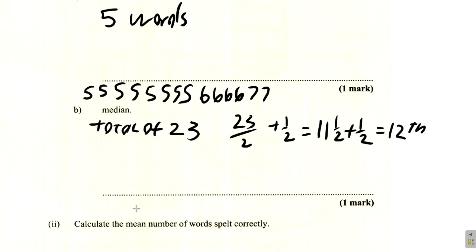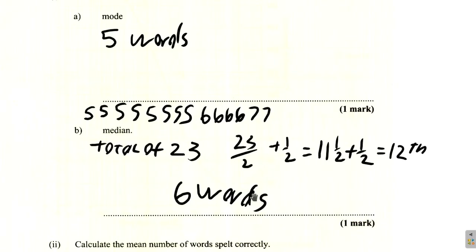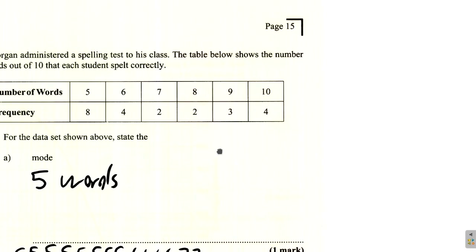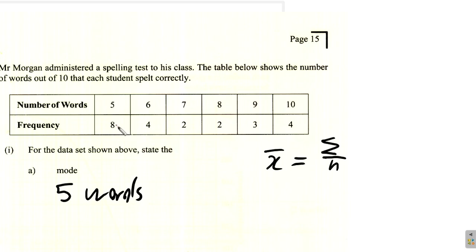The median would be 6 words. Now, after that, you're going to calculate the mean number of words spelled correctly. When you calculate the mean, call it x-bar, it is the sum of the items divided by the number of them. It does not mean you add 5, 6, 7, 8, 9, 10 and divide by 6, and neither do you add 8 plus 4 plus 2 plus 2 plus 3 plus 4 and divide by 6.